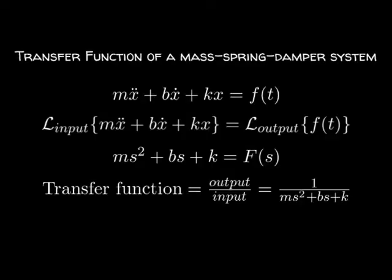The transfer function of an equation is the Laplace transform of its output over the Laplace transform of its input. For example, here we find the transfer function of a mass spring damper system. Because the Laplace transform of a function is unique, in fact we cannot have an inverse Laplace transform if this was not true, we see here that the transfer function must also be unique.